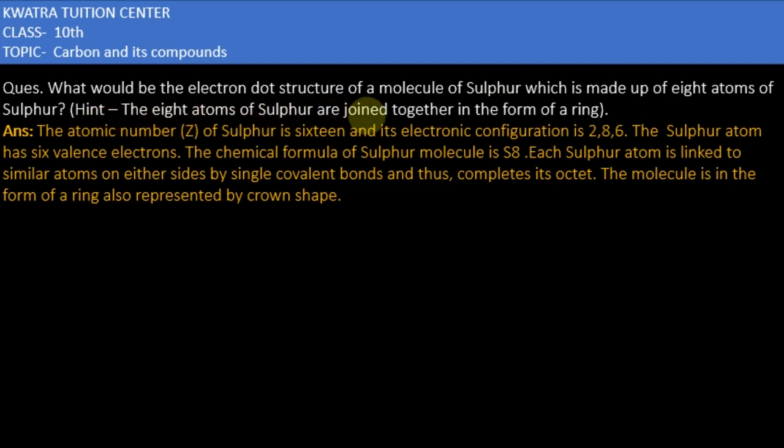Hint: the 8 atoms of sulfur are joined together in the form of a ring. The question is asking for the electron structure of sulfur, with the hint that the 8 atoms of sulfur are joined in the form of a ring.